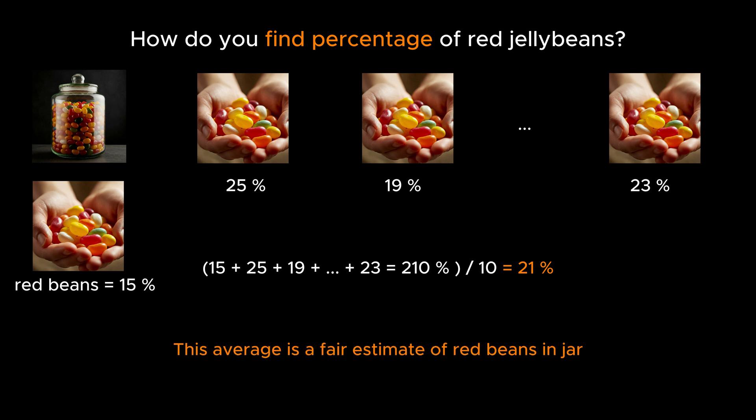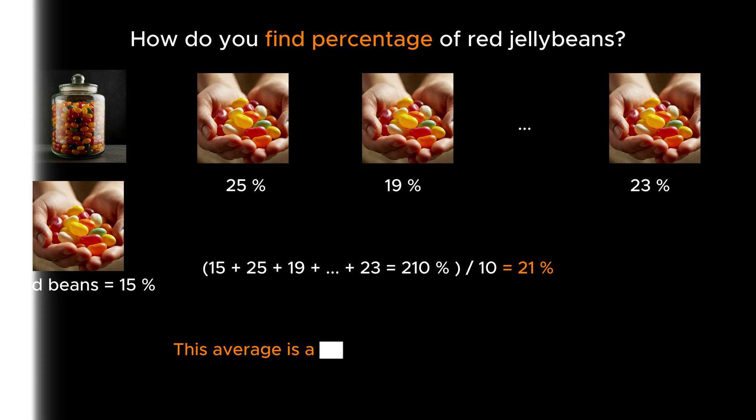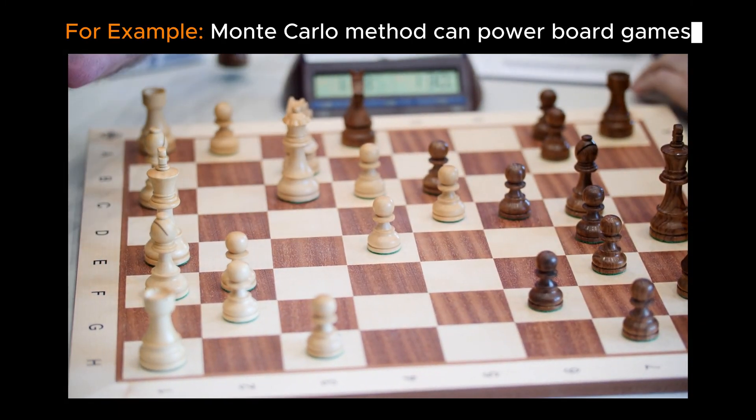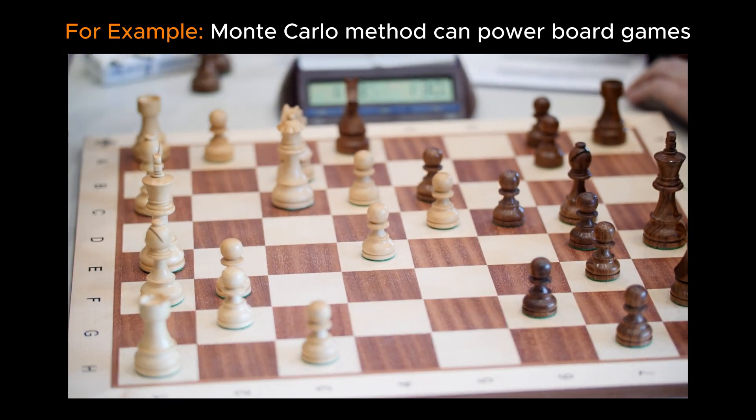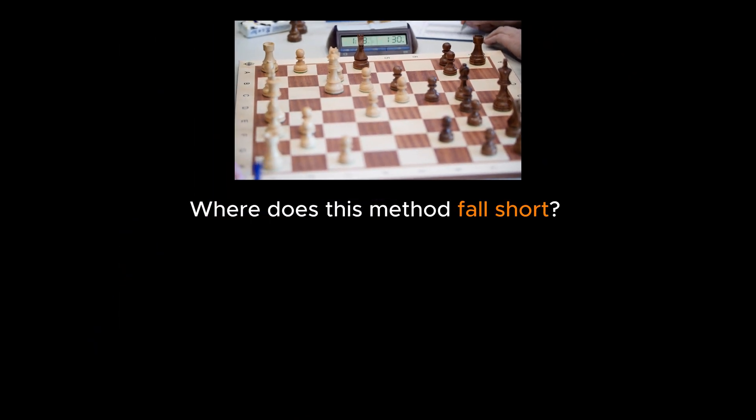This average would be a fair estimate of the true percentage of red jelly beans in the jar. But how can we use this method to build an algorithm that can play a board game? What are the downsides of this method?